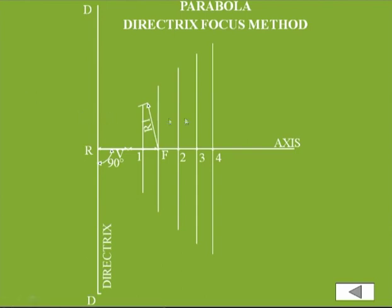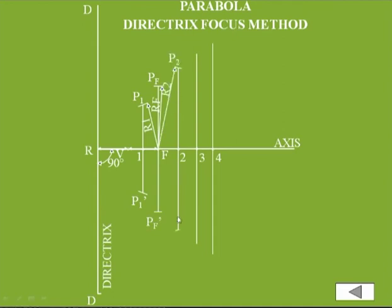Similarly, for the line through point two which is at distance R2 from the fixed line, take F as center with radius R2 and mark arcs on both sides of the axis — giving points P2 and P2-dash. For the line through point three, take radius R3 and mark P3 and P3-dash, and similarly P4 and P4-dash. Draw the curve passing through all these points — that will be the parabolic curve.